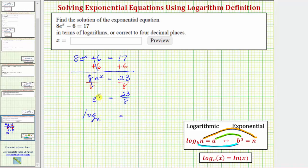A logarithm is an exponent. The exponent is x, so the logarithm is going to equal x. And e^x equals the number 23/8, which means you have log base e of 23/8 equals x.